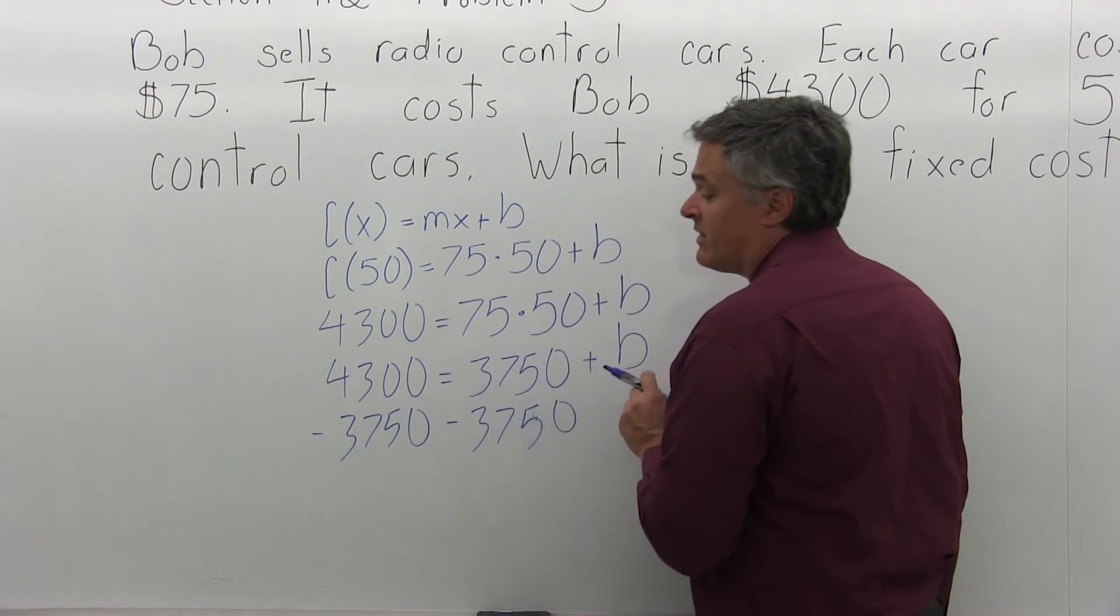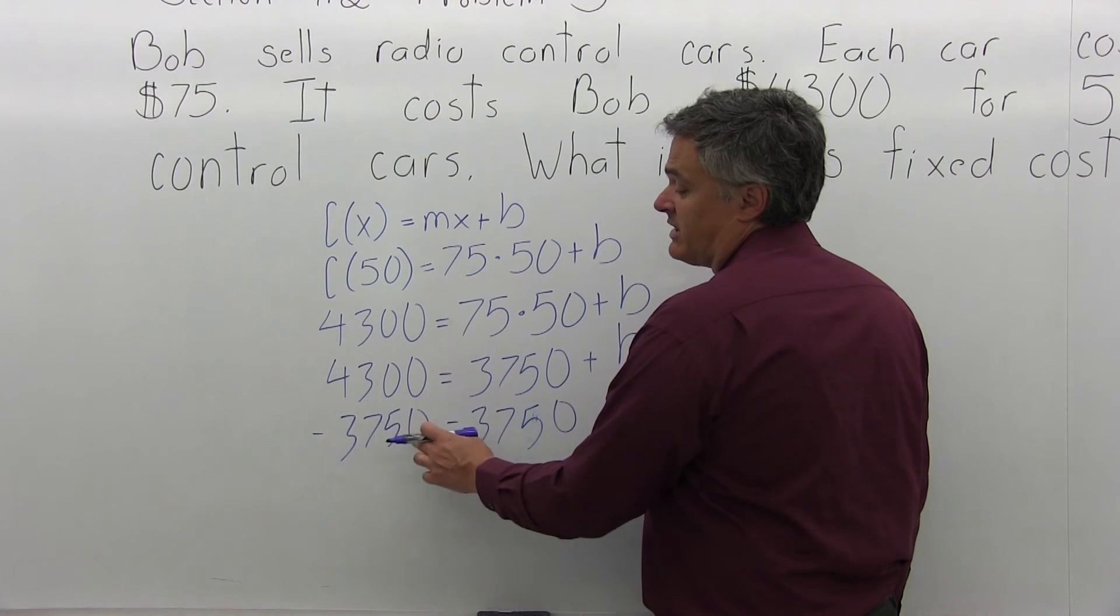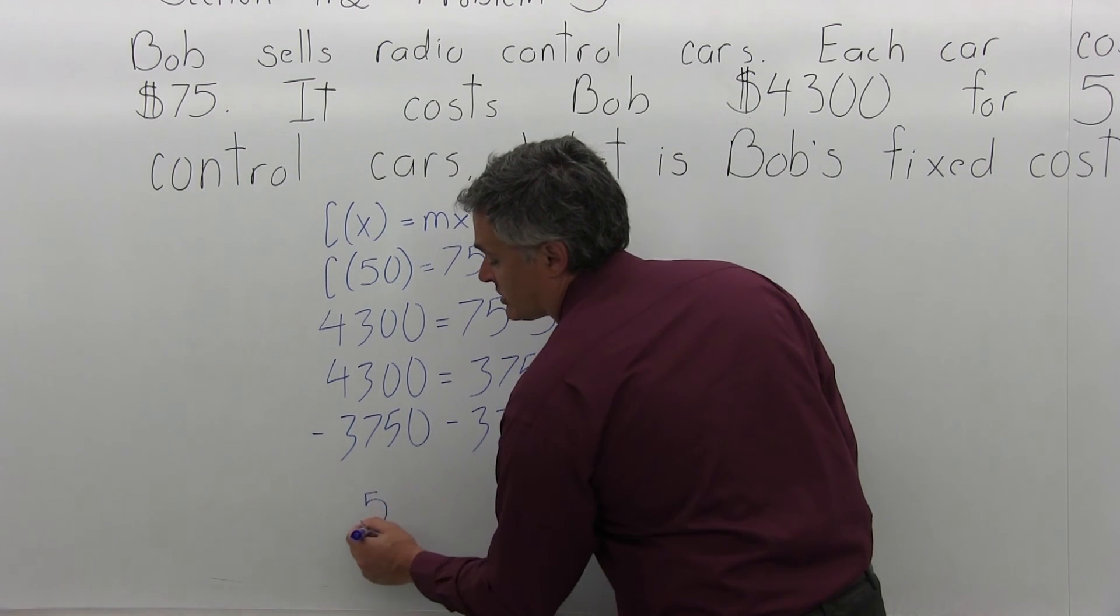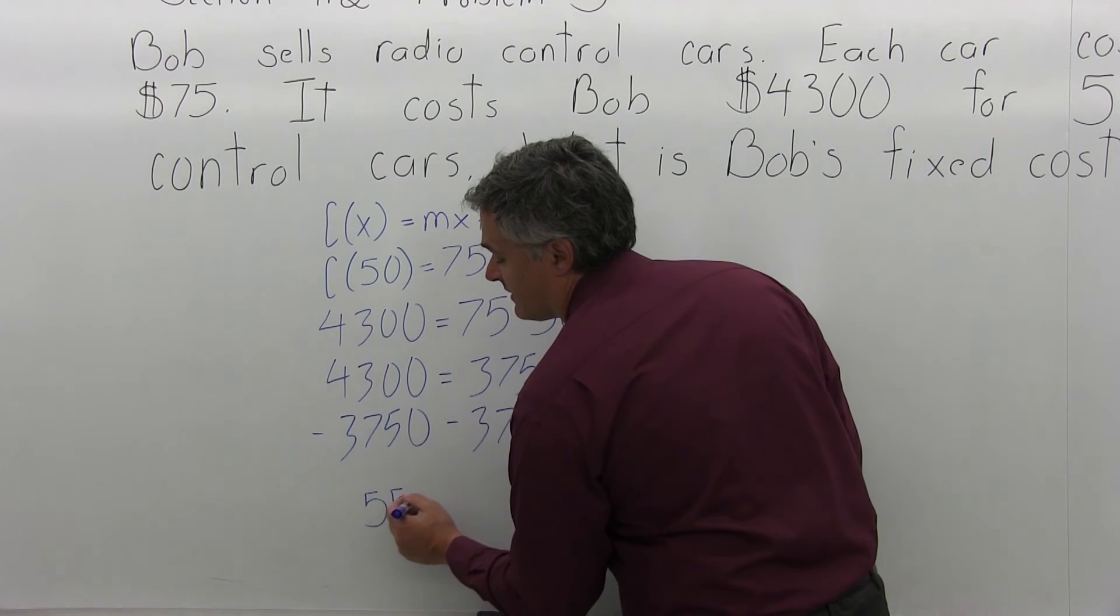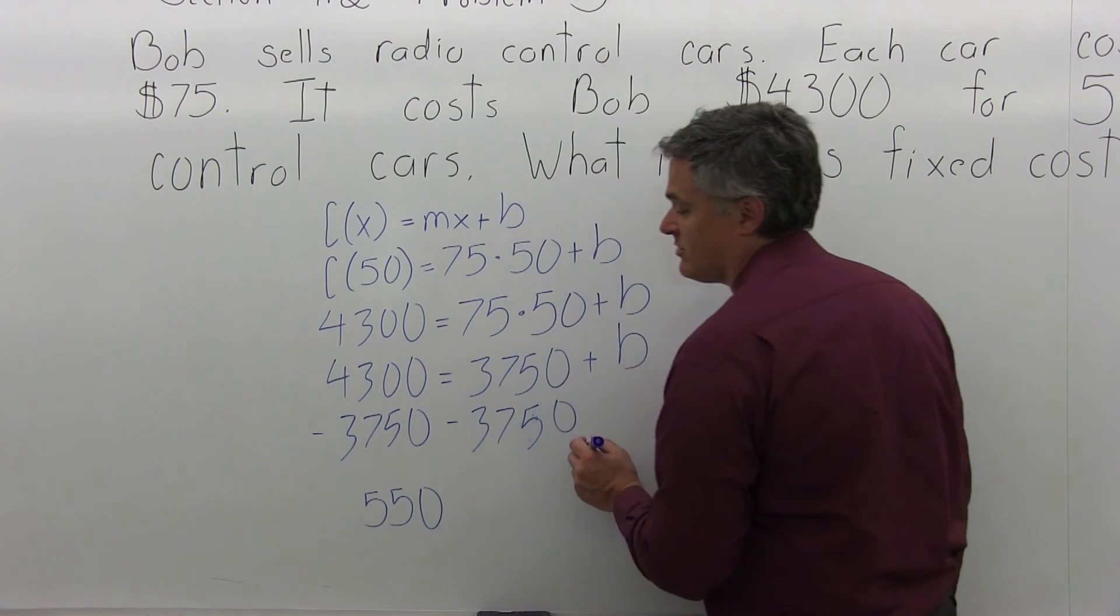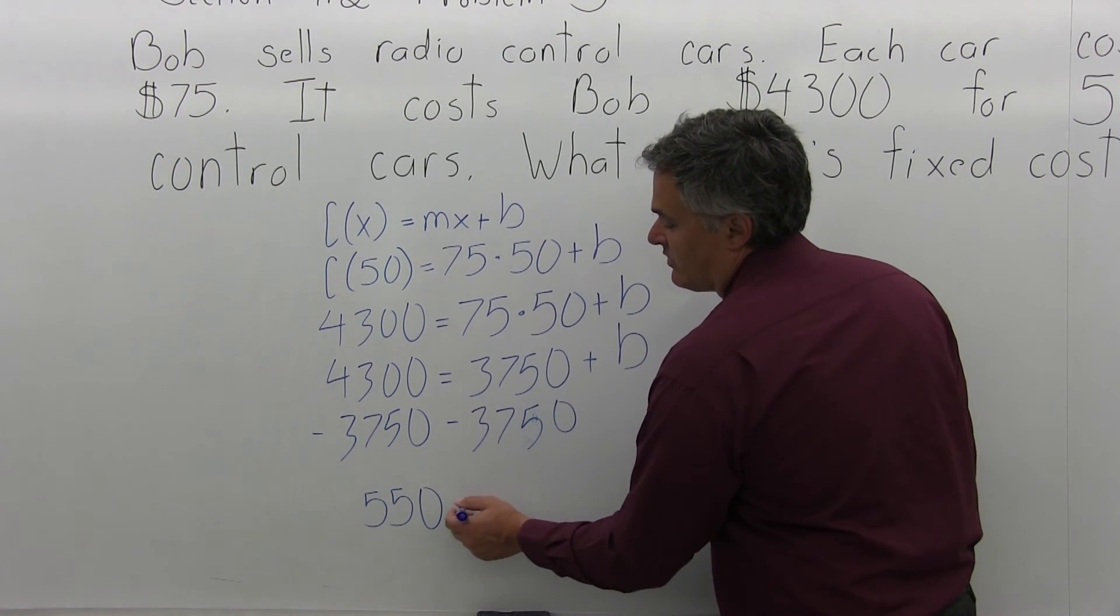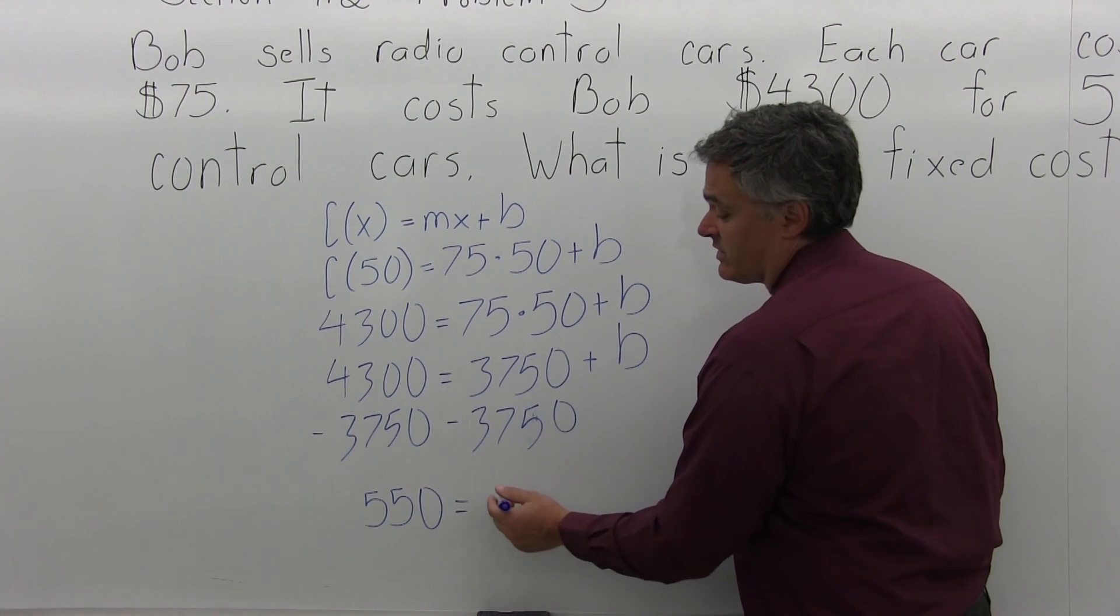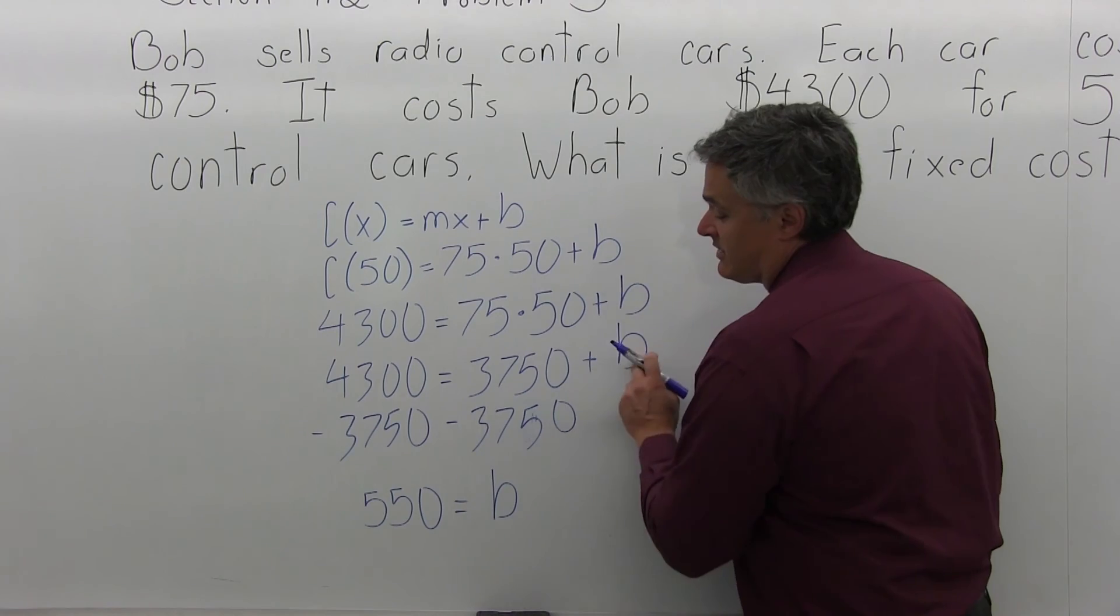So on the left, when I have positive 4,300 and negative 3,750, when I do that subtraction, I get positive 550. And again, you can use your calculator to do that. And then B equals, on the left, the positive 3,750 and negative 3,750 will cancel. And I just have B.